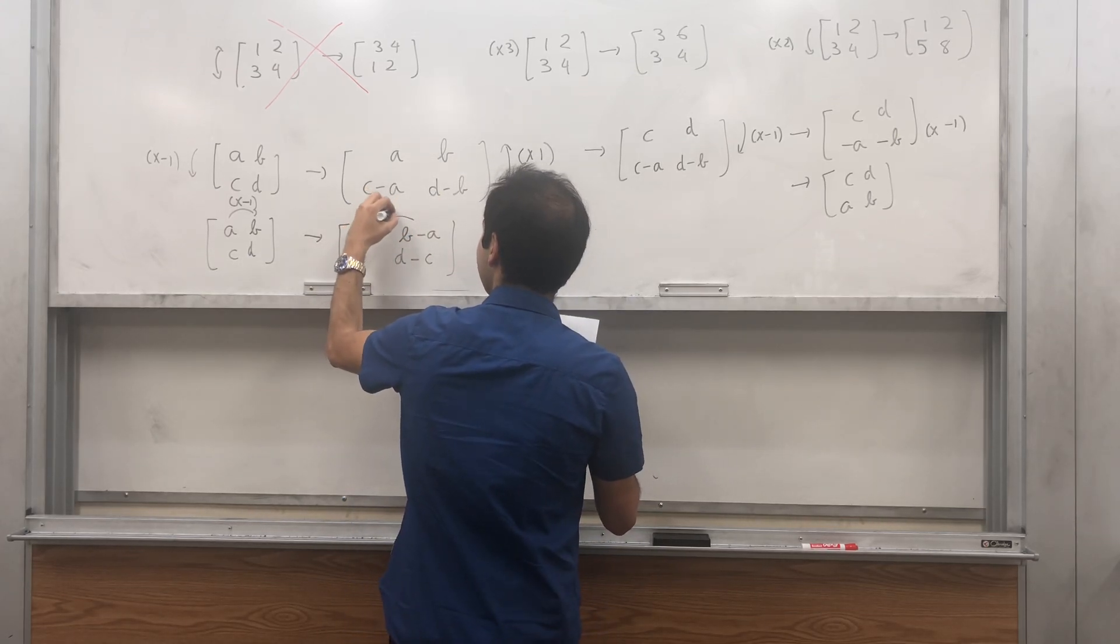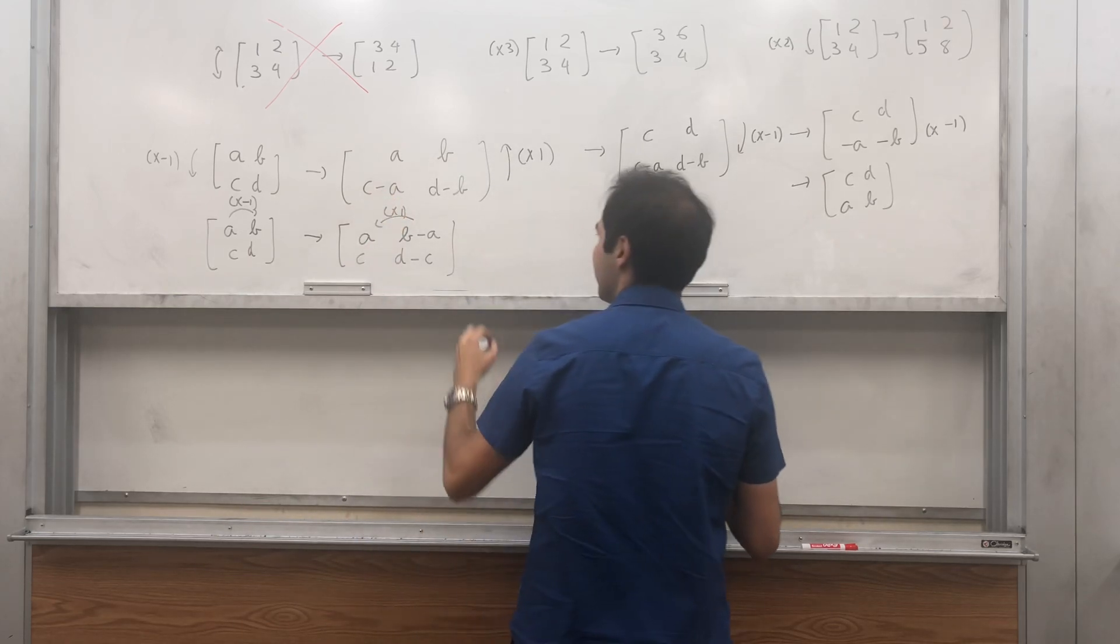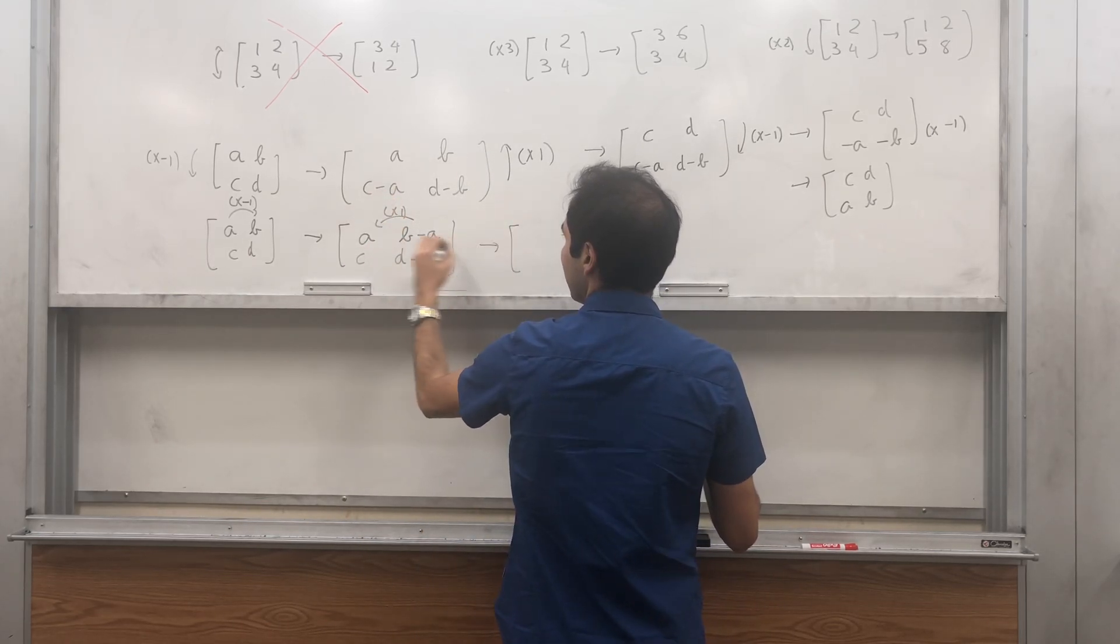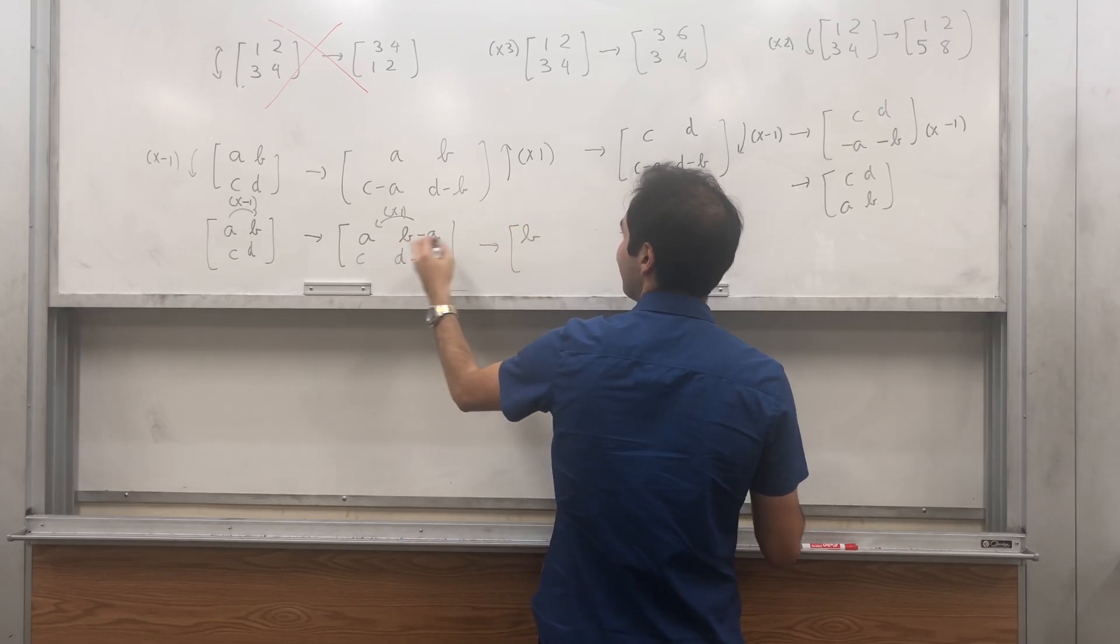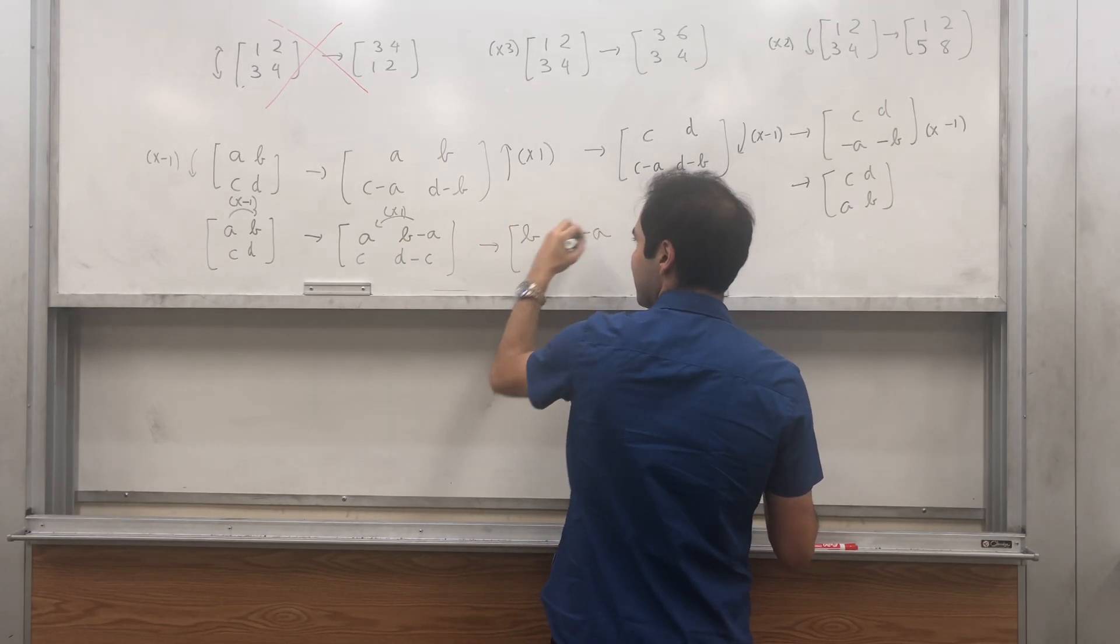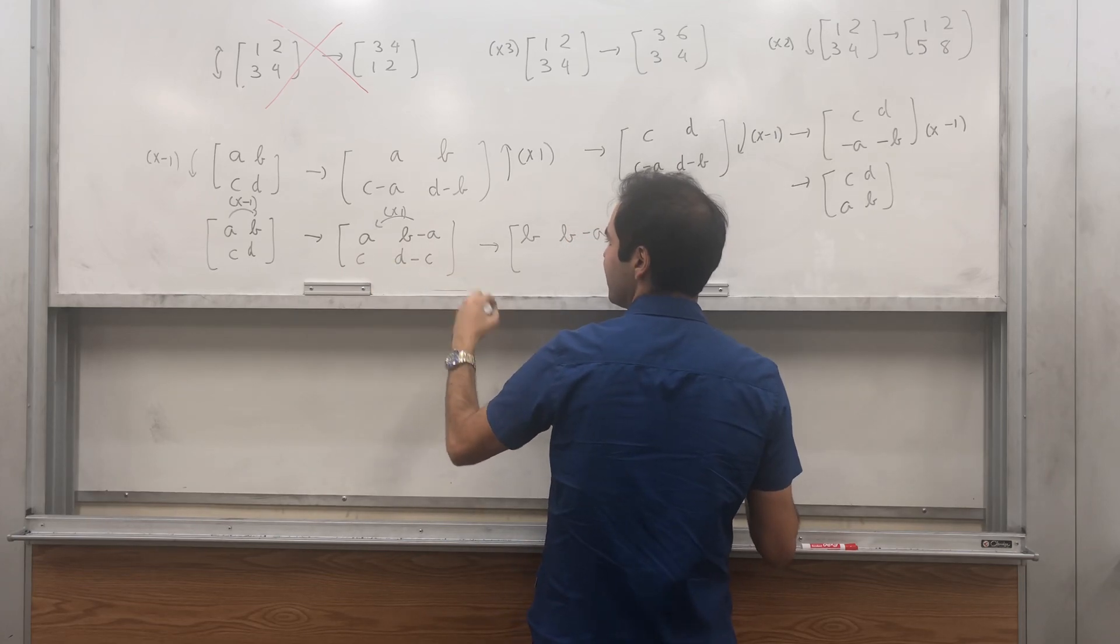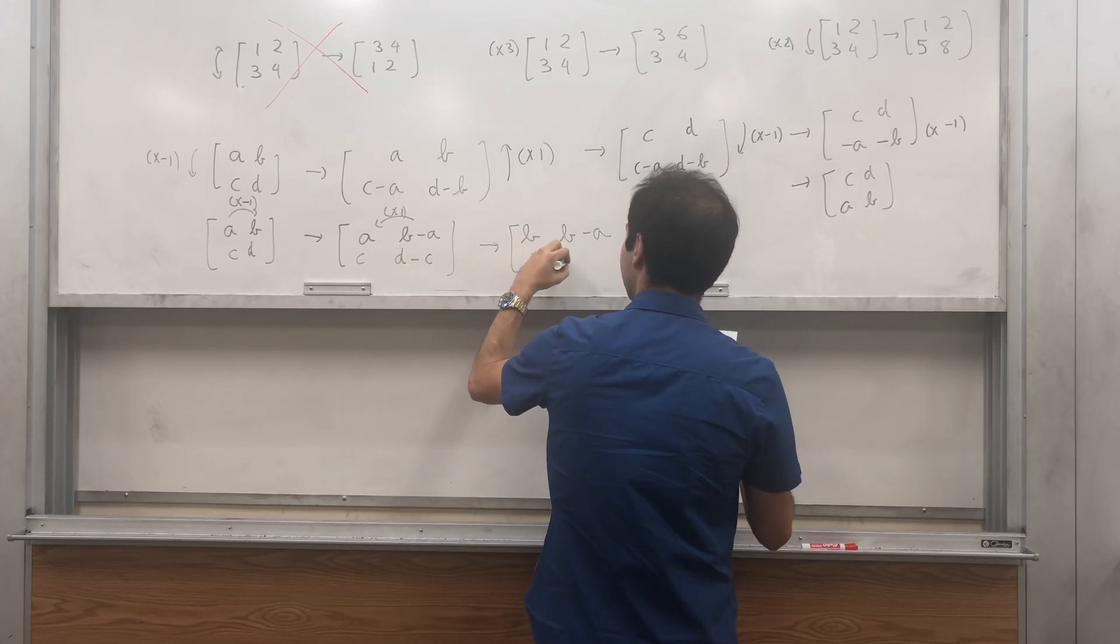And then you add this column to this one to get A plus B minus A, so B, and then B minus A. C plus D minus C, which is D, and then D minus C.